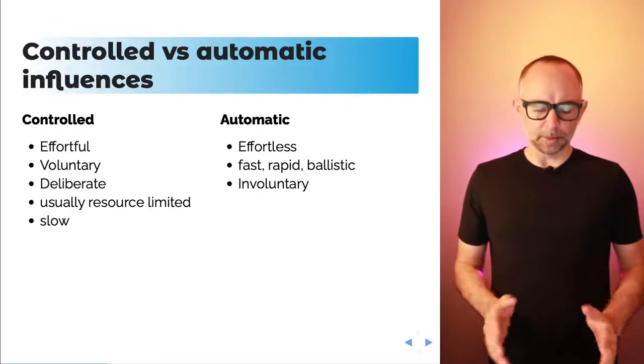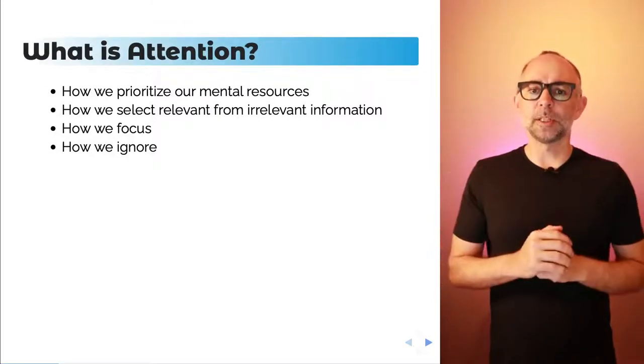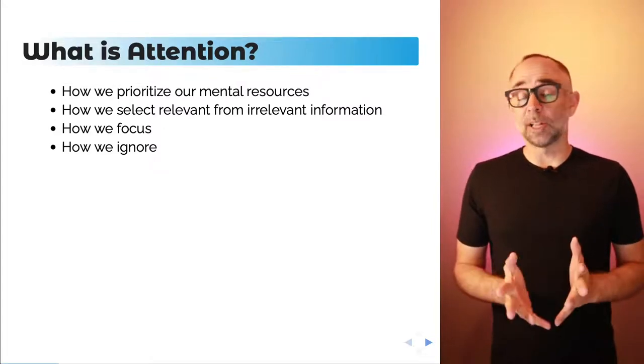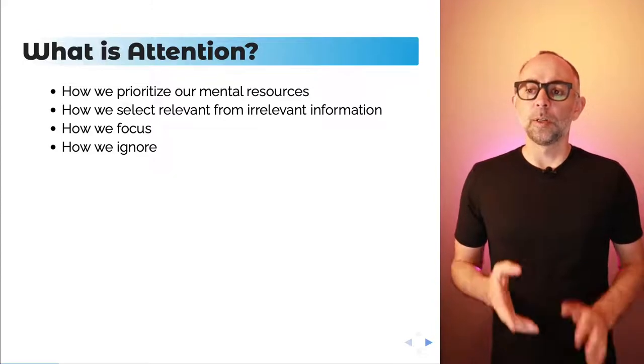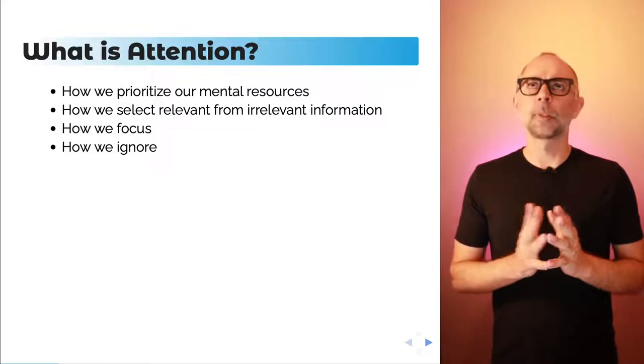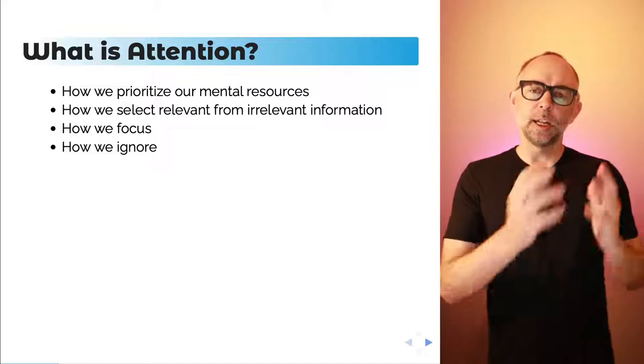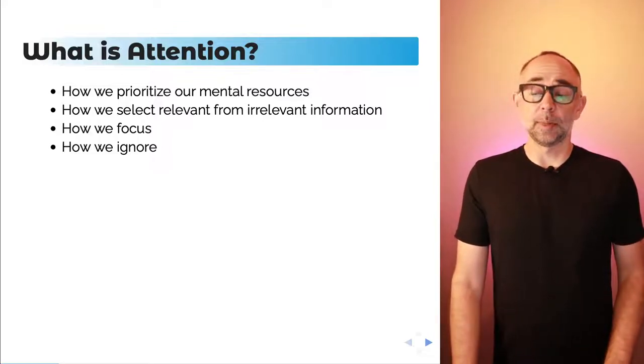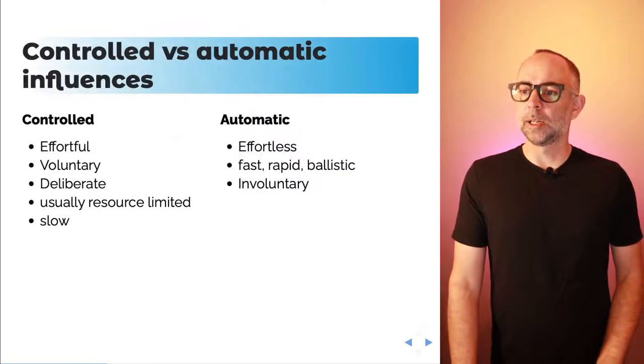When we think about how do we prioritize our mental resources, and select relevant from irrelevant information, one of the major questions in this domain of research is to think about the controlled ways people might do this, and some of the automatic ways that this might occur. There's more than one way to prioritize information.